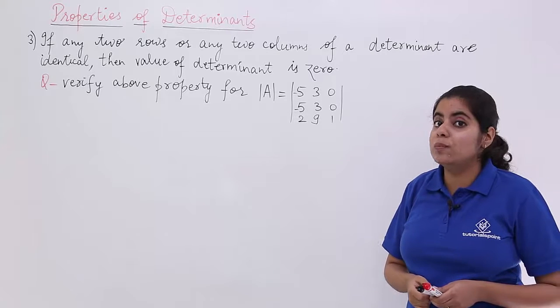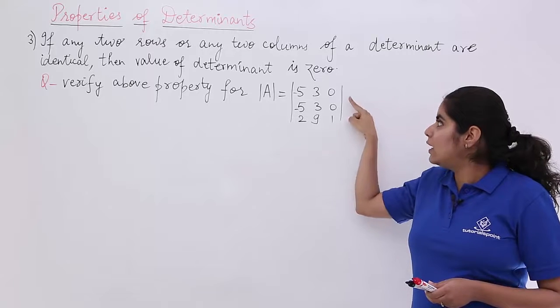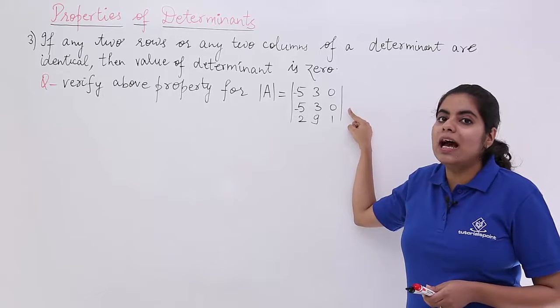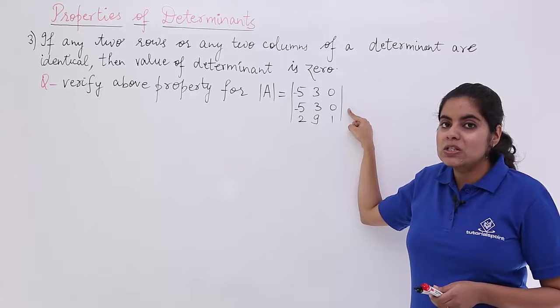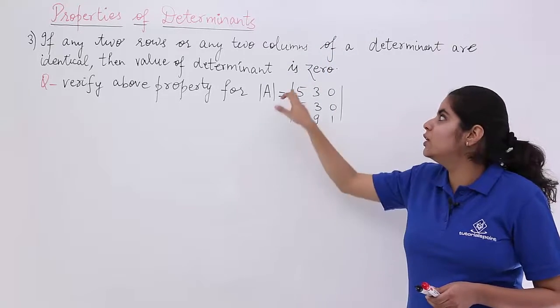What do you observe? You observe that you have two rows identical. R1 and R2, row 1 and row 2 are same. So that means by this property, clearly the value of determinant should be 0.